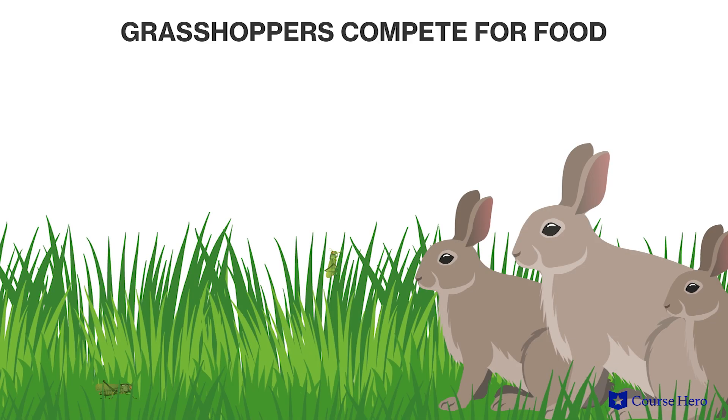Biotic factors can influence the distribution of species in several ways. For example, either the presence of a large population of wolves or the absence of plentiful grasses may cause a population of rabbits to leave an area or die out. Competition can also play a role in where a species is found. Competition exists when species fight each other directly or when they use the same resource. For example, if there are no wolves and plenty of grasses, but a large population of grasshoppers consumes the grasses before the rabbits can find them, the rabbit population may leave the area or die out.